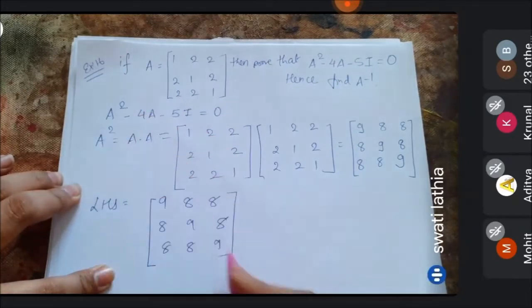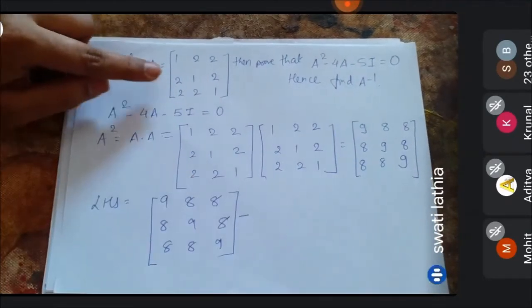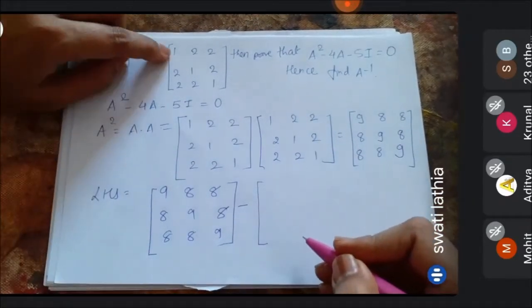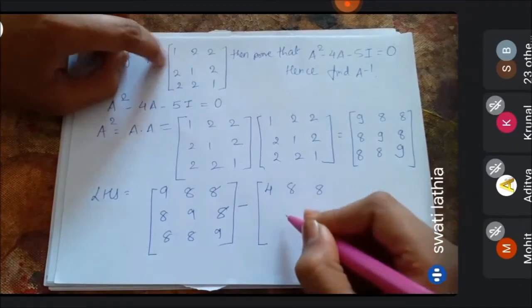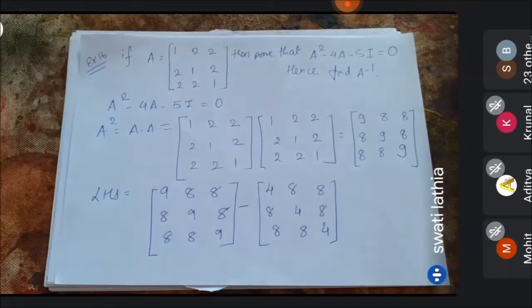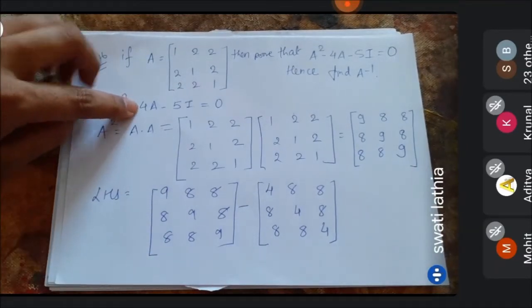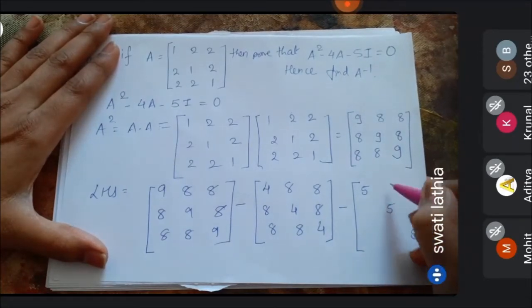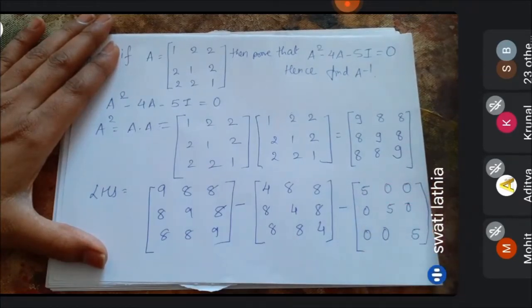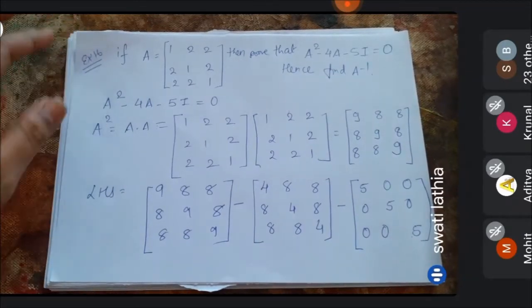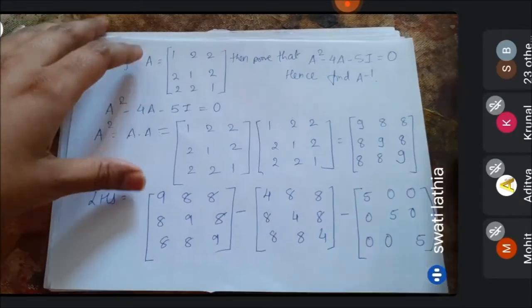Left-hand side: write A² as [[9,8,8],[8,9,8],[8,8,9]], then minus 4A — multiply each element of A by 4, giving [[4,8,8],[8,4,8],[8,8,4]]. Then minus 5I — where identity matrix has 1s on diagonal, multiplying by 5 gives [[5,0,0],[0,5,0],[0,0,5]]. Now we have three matrices to subtract.